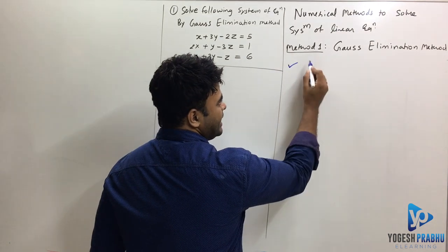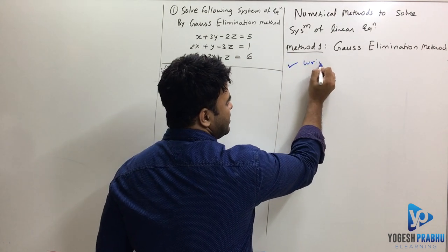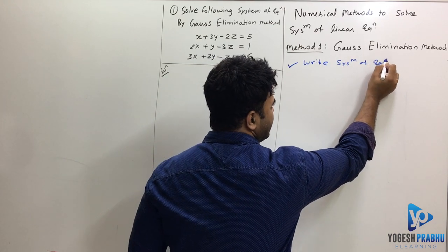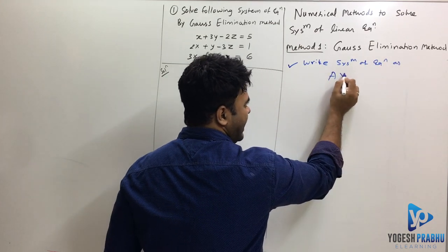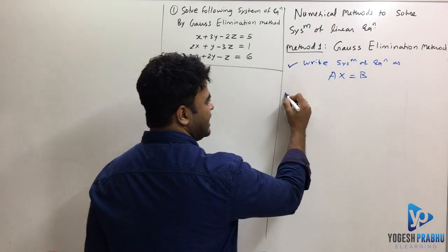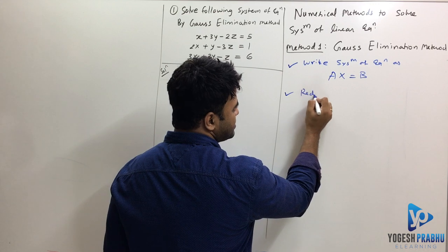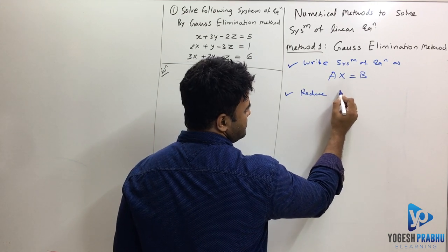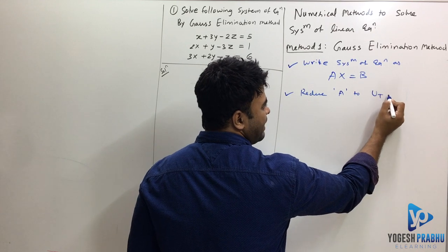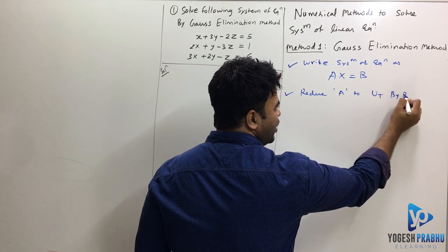The first step here is write system of equations as Ax equals b. Write it in the matrix form. Then next is reduce A to upper triangular matrix by row operations.